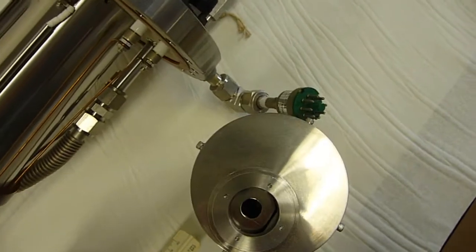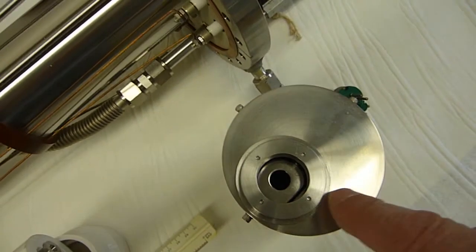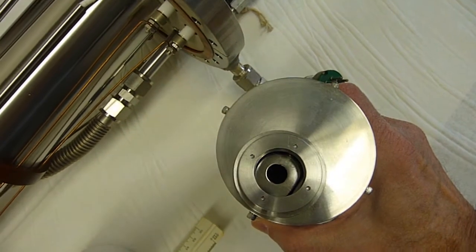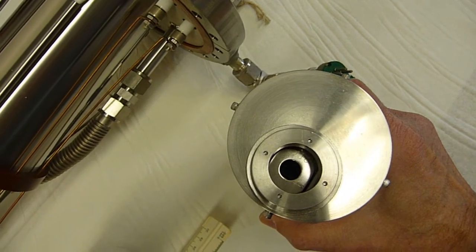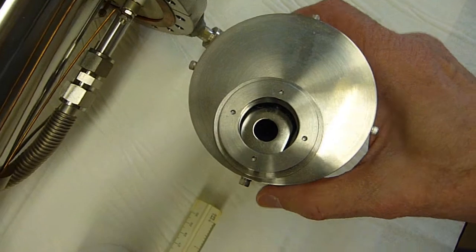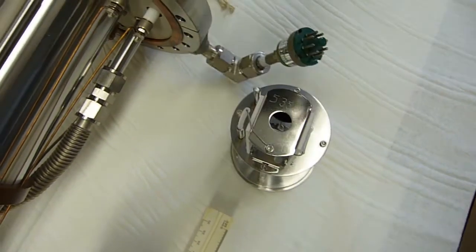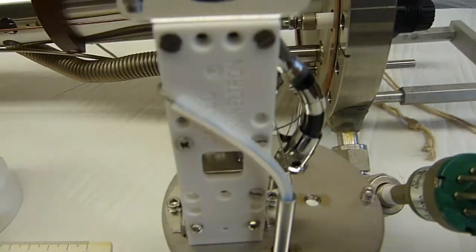So the ions would make their way, there would be a voltage on this entrance plate to the detector, and if we take the detector housing off and we take a look, you can see the detector.